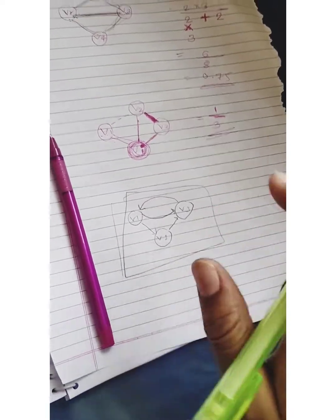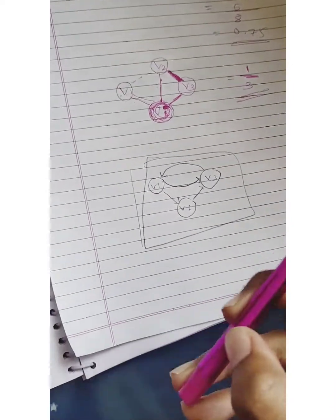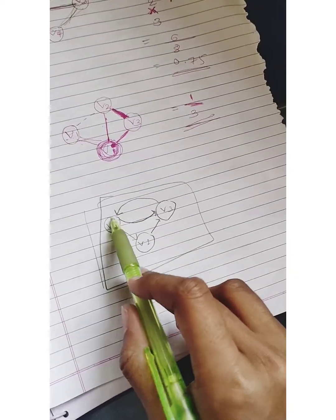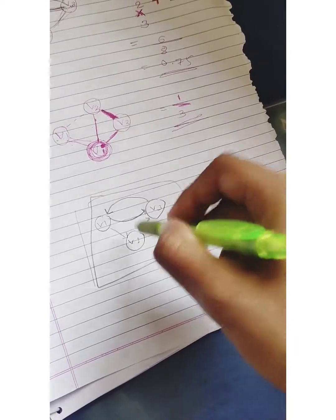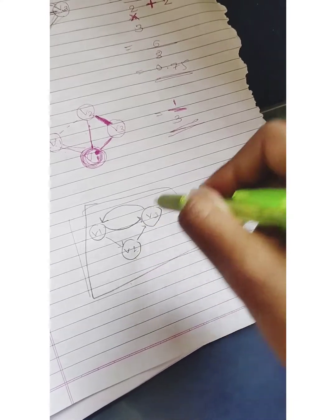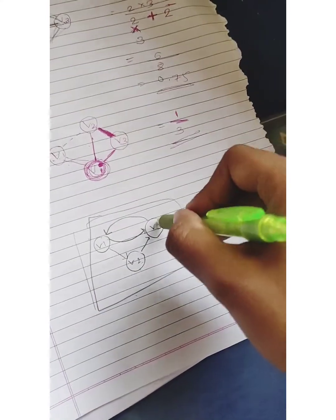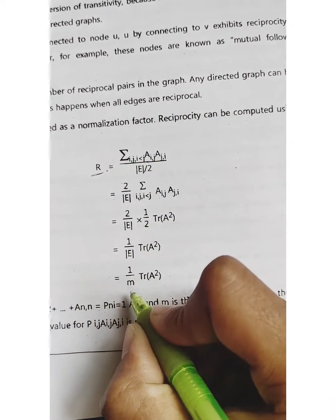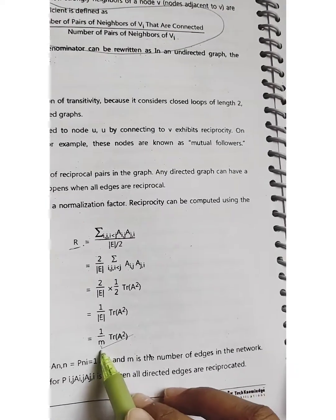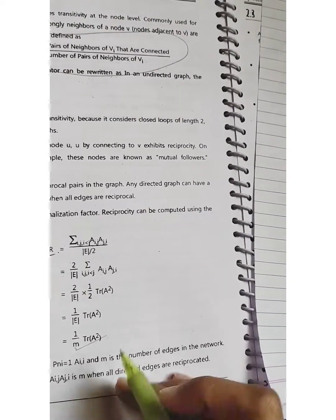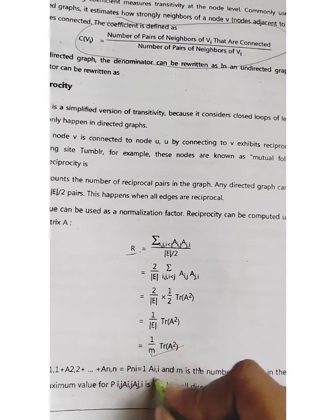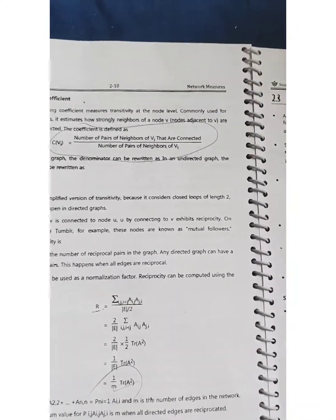This is the main diagram of reciprocity — remember this. The formula for reciprocity is: r = (1/m) × tr(A²), where m is the number of edges in the network, A is the adjacency matrix, and tr means the trace — the summation of the diagonal of the adjacency matrix squared. This is the very important formula for reciprocity. That completes transitivity and reciprocity.